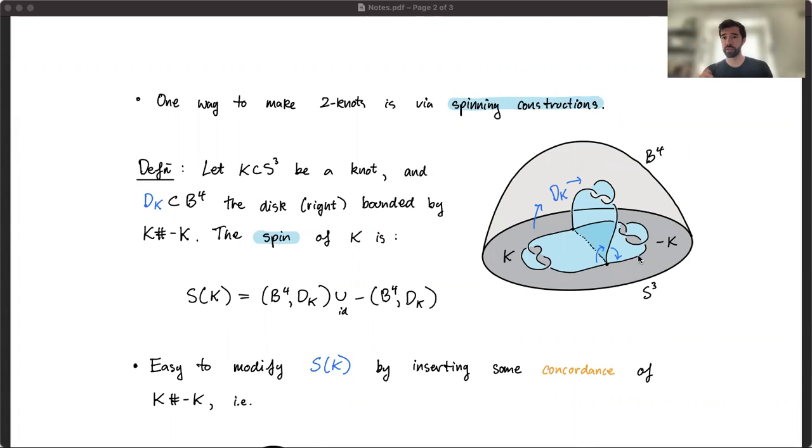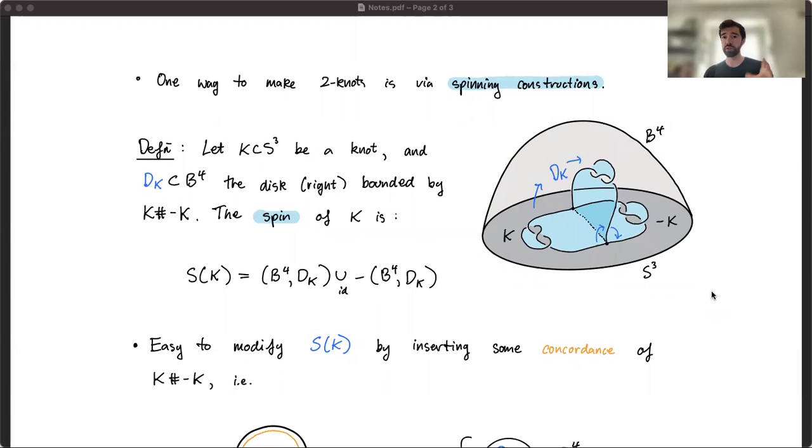And that properly embedded disk is the trace of this knotted arc through each of the B³ slices. And on the boundary, you see the 3-sphere together with k connected sum its mirror. One thing you could do if you wanted to make an interesting embedding of a 2-sphere in a 4-sphere is you could just double this picture.